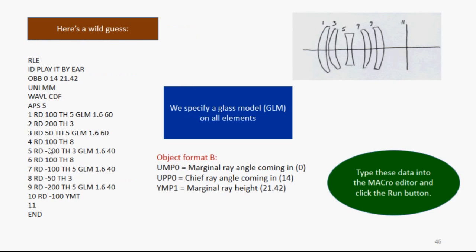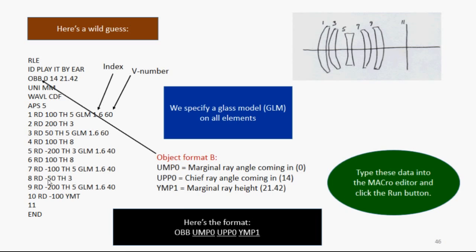I'm going to guess the value for the index and the Abbe number. This will put the glass model variable right in the middle of the glass chart. Now the glass model can move anywhere it wants on the glass table, and it will tell you where you want to be on the glass chart. And I'm going to enter an object type B. There are many object formats. Object format B has these arguments. And if you look in the help file, it's described like this. The first argument, UMP0, is the angle of the marginal ray coming in, which is zero, which means the object is at infinity. The second argument is the chief ray angle coming in. This is 14 degrees. And the third argument, YMP1, is the height of the marginal ray coming in, which is the semi aperture of the entering beam. That describes the object uniquely.